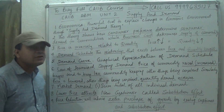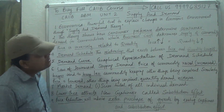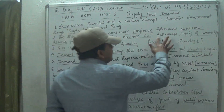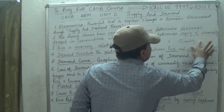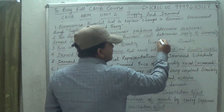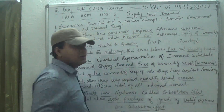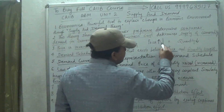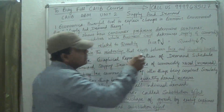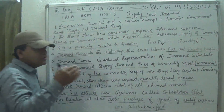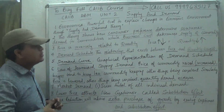Price is inversely related to quantity. If the price increases, definitely the quantity demanded will decrease. If the price decreases, then the quantity demanded will increase. So it is in reverse order — they are inversely related, opposite to each other.